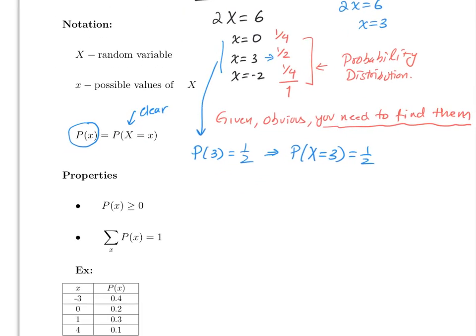Let's make the properties official. The probabilities of a random variable must satisfy two conditions: first, all probabilities have to be positive; and second, when you add all of them, the sum has to equal 1. As mentioned, these values are either given to you, should be obvious, or you need to do work to find them — just like you did in Section 4.1.